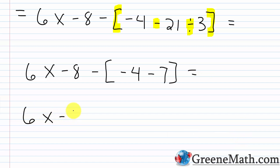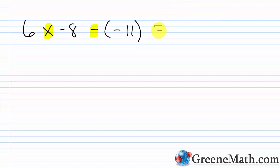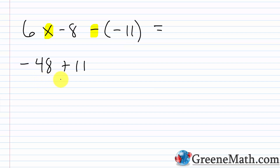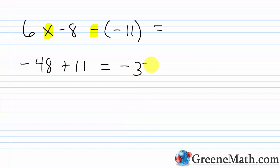We have multiplication and subtraction, so multiply first. Six times negative eight — positive times negative is negative, six times eight is 48 — so negative 48. Then minus negative eleven, which becomes plus positive eleven. Now we have negative 48 plus 11. The sign is negative since 48 has the larger absolute value. Forty-eight minus eleven: eight minus one is seven, four minus one is three. So the answer is negative 37.